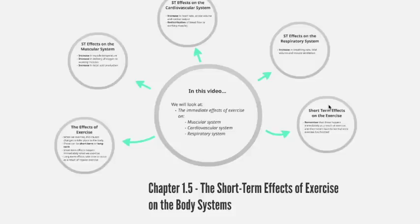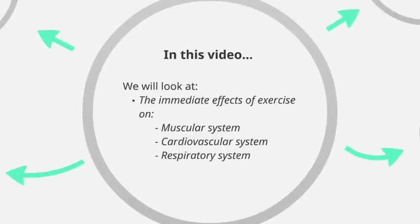Chapter 1.5: the short-term effects of exercise on the body systems. In this video we will look at the immediate effects of exercise on the muscular system, the cardiovascular system, and the respiratory system. We've looked at these three systems individually, and now we're going to look at what effects exercise has on each of them.